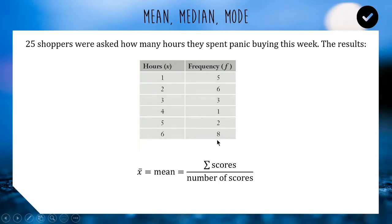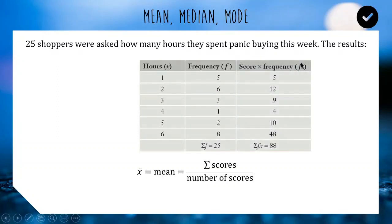A column you'll frequently see with a table like this is the fx column — x for score, f for frequency, multiplied. Because if we were trying to add up all the scores in this data set, there's one five times, so we'd do one plus one plus one plus one plus one. There are six twos, so we'd do two plus two plus two. That's very time consuming — it's obviously much more efficient to use multiplication.